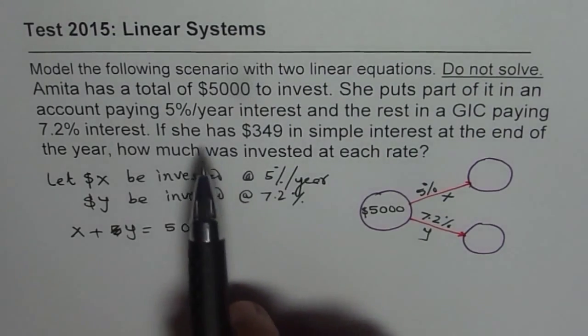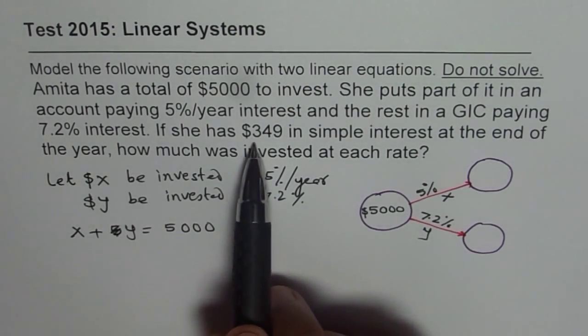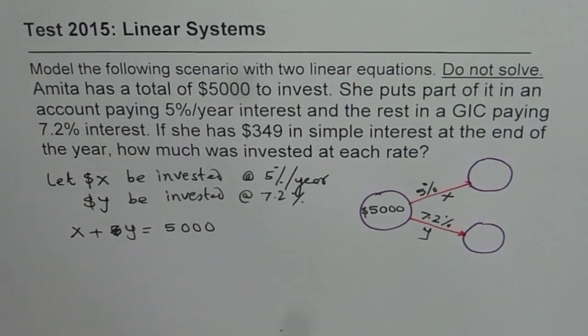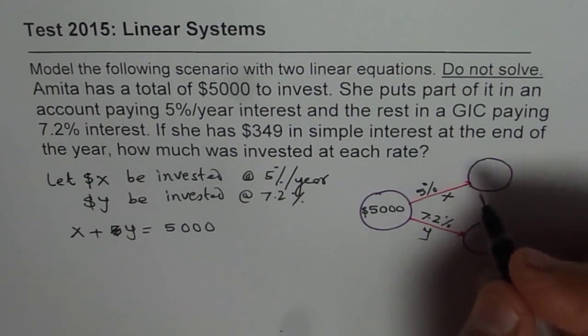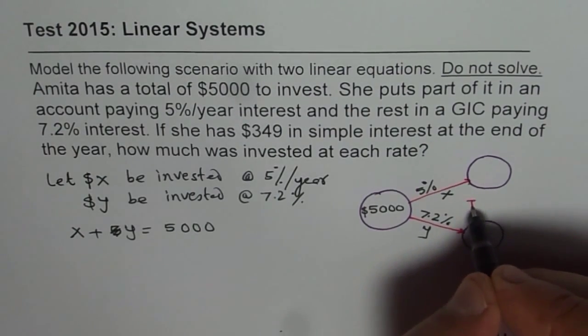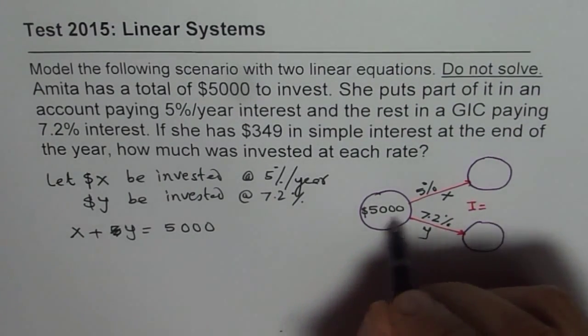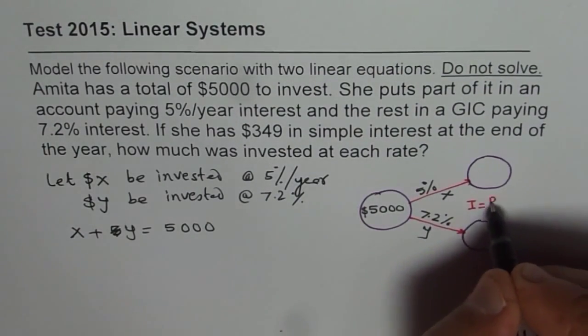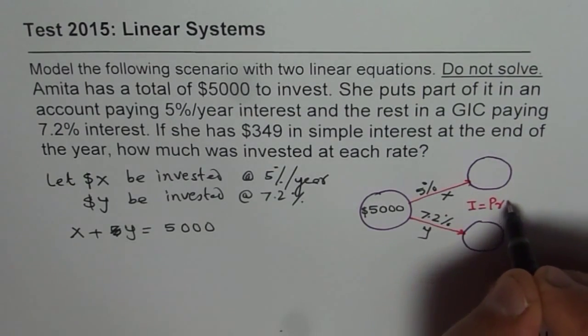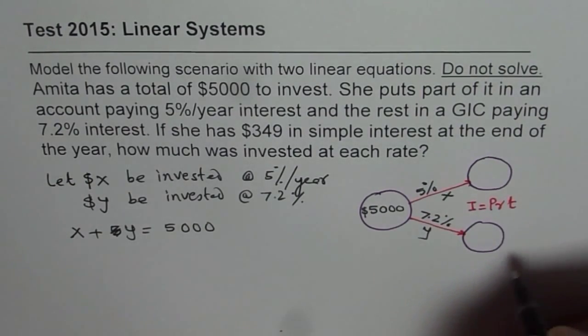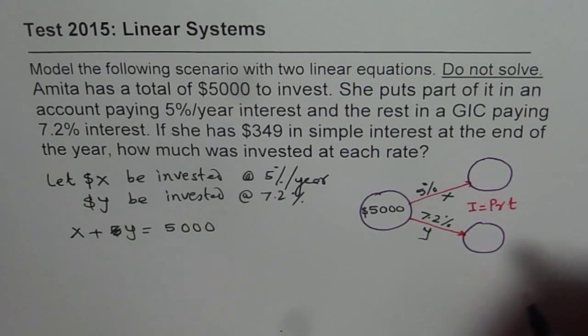Now we know that the interest earned in one year is $349. So what is interest? Interest is equal to, we say interest formula is PRT. Amount invested, rate of interest and time. That is the simple interest. Time is one year per year.